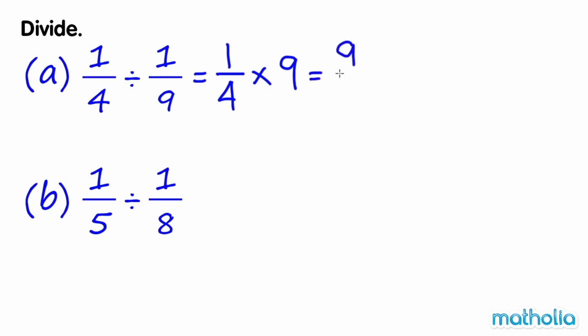Nine-quarters is an improper fraction and can be expressed as the mixed number two and one-quarter. So, one-quarter divide one-ninth equals two and one-quarter.